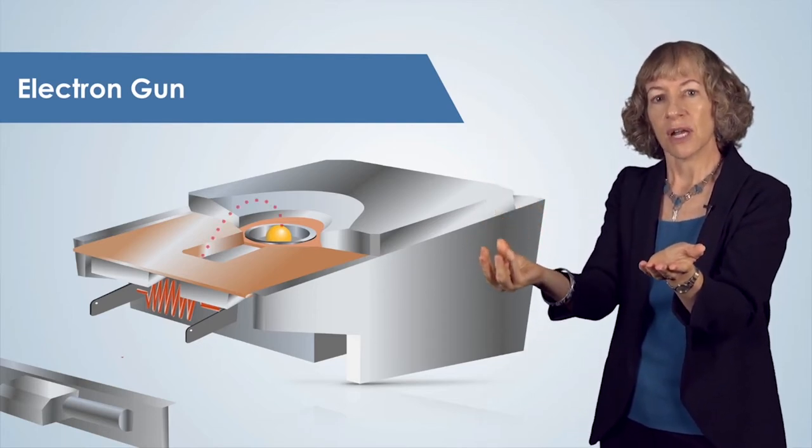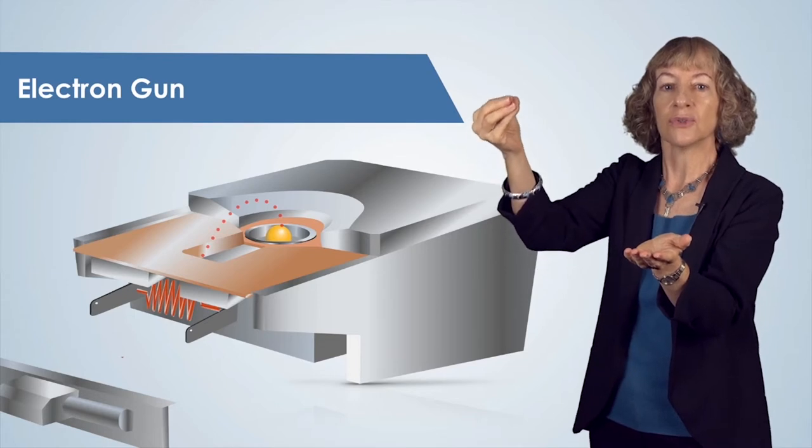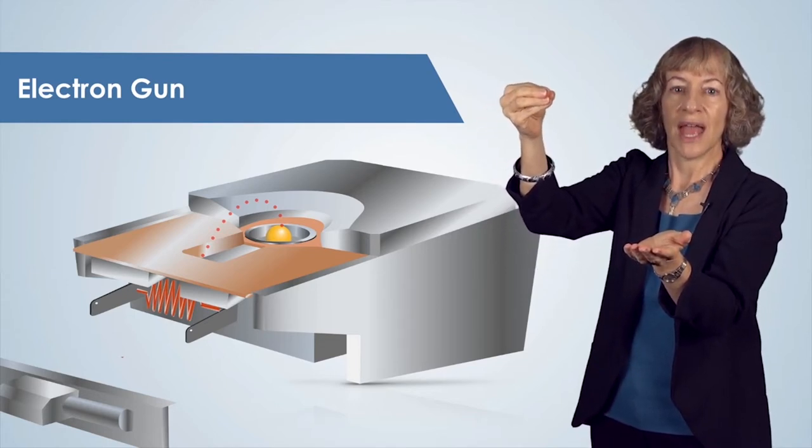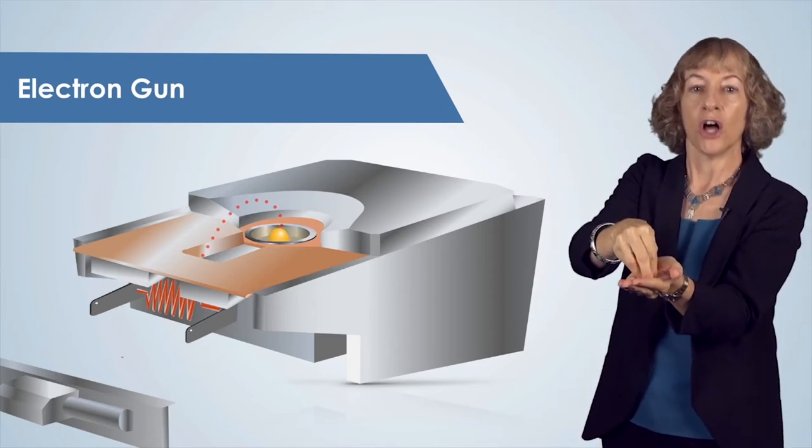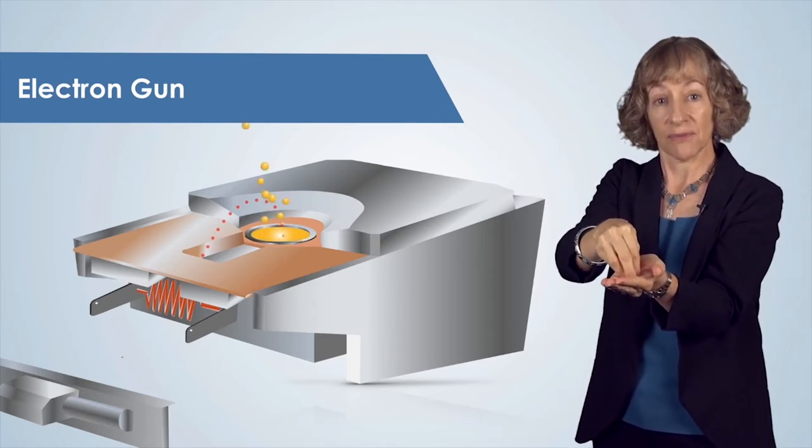These electrons are then accelerated toward the source material using a high voltage electrode, and a set of magnets steer and focus the beam onto the source material to be evaporated. The power level can be controlled by adjusting the filament current. This is very important, since some materials require lower power to melt and can burn at higher power, while others require higher power just to melt.